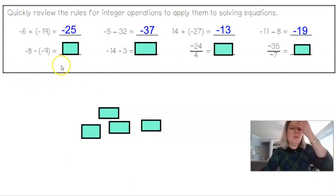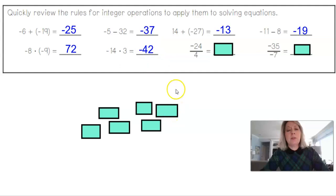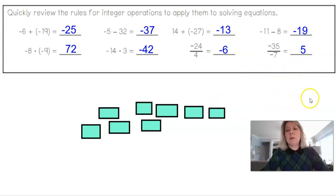In the bottom row there's multiplication and division. Negative 8 times negative 9 is positive 72 — matching signs. Negative 14 times 3 is negative 42 because of mismatched signs. 24 divided by 4 is 6, but negative 24 divided by positive 4 is negative 6. And negative 35 divided by negative 7 — matching signs, positive answer — is positive 5.